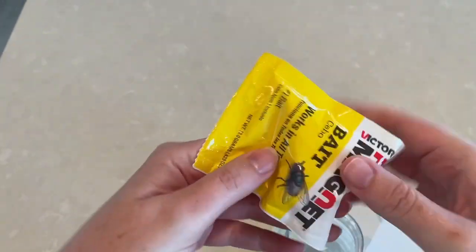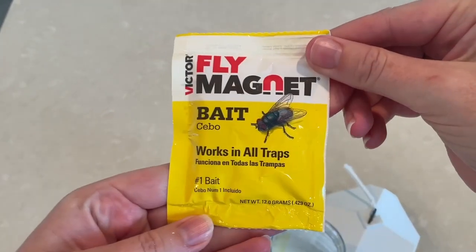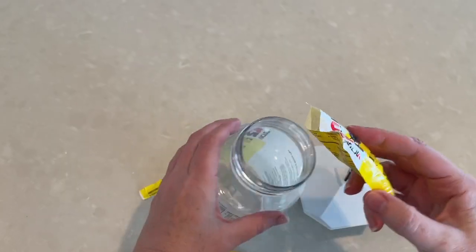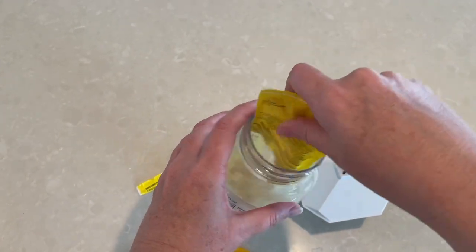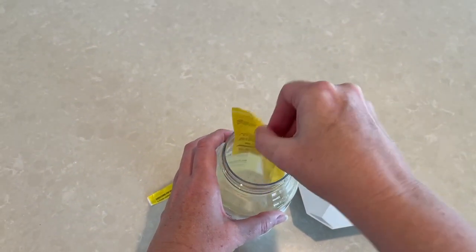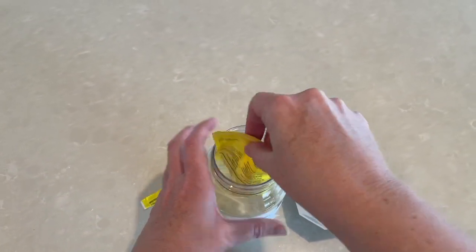Inside the container is the bait so you want to open that up and pour it all into the container. You can keep the container and reuse it multiple times so you can buy additional bait online.